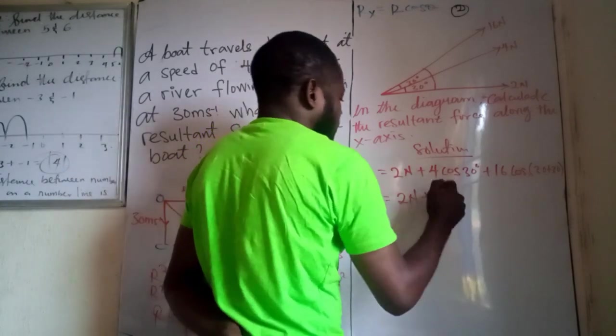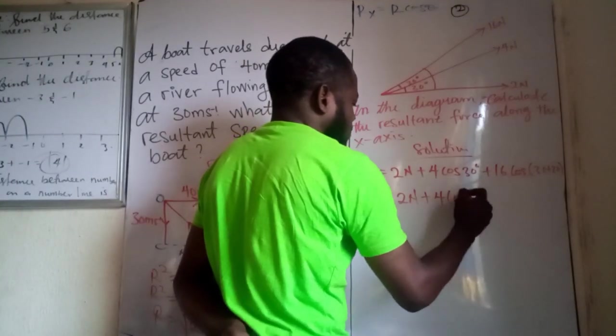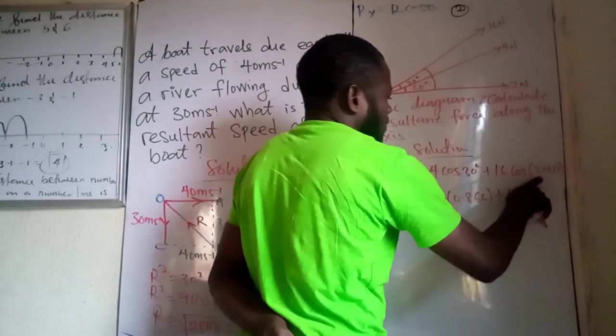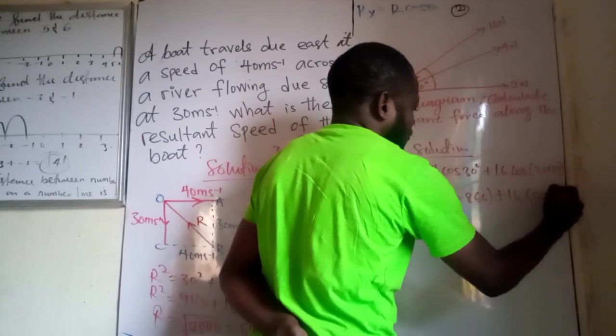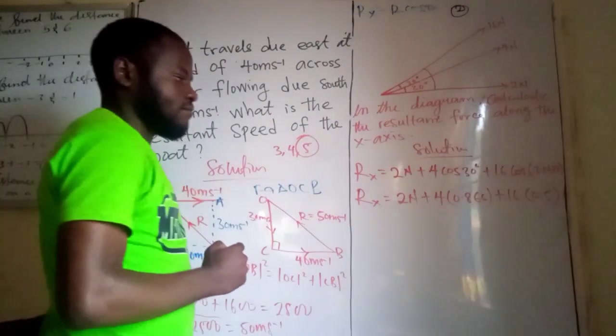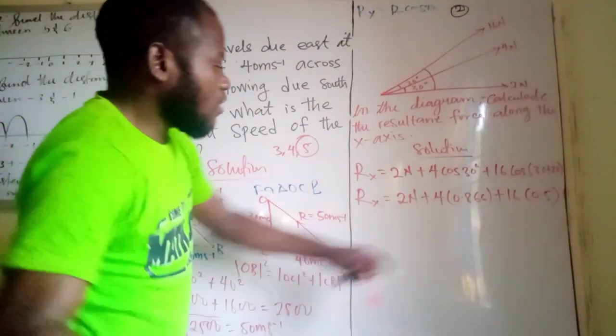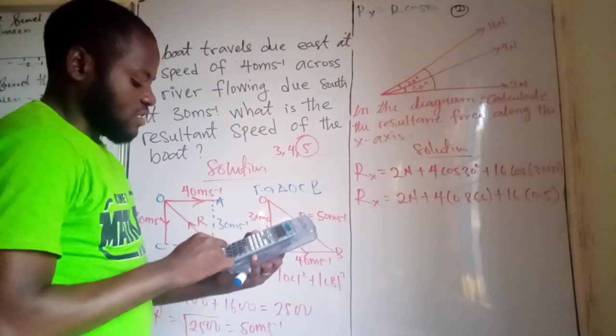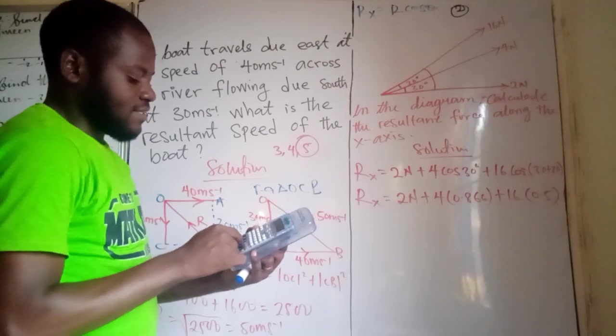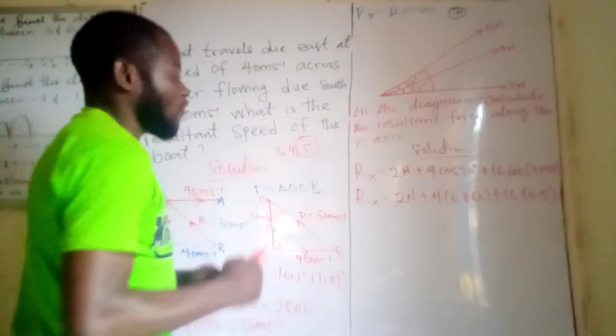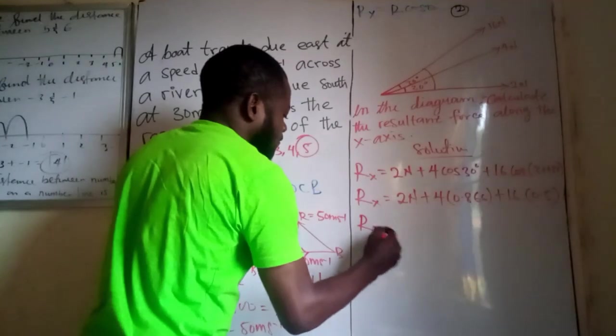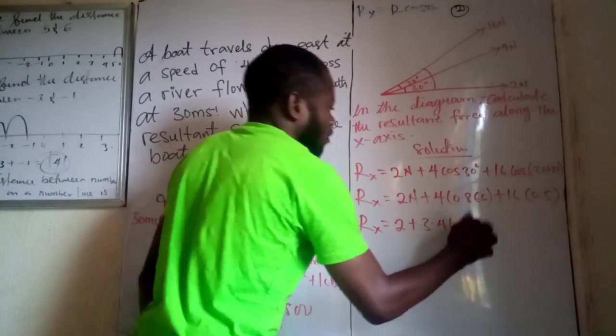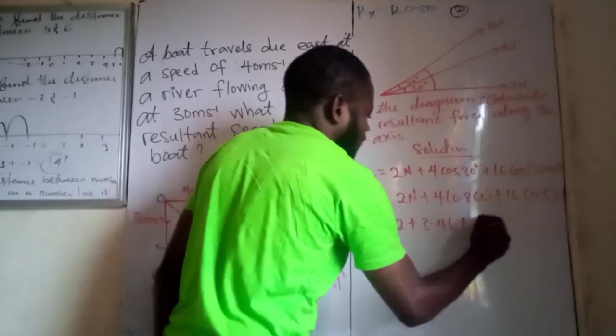Our cos 30 should give us 0.866 plus 16. This is going to be 60. Cos 60 is 0.5. So, 4 times 0.866. So, we have 3.46.